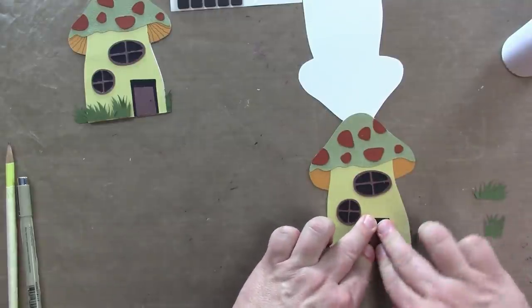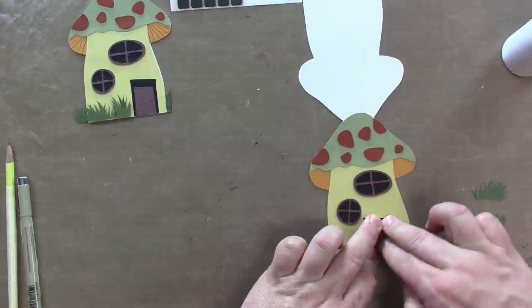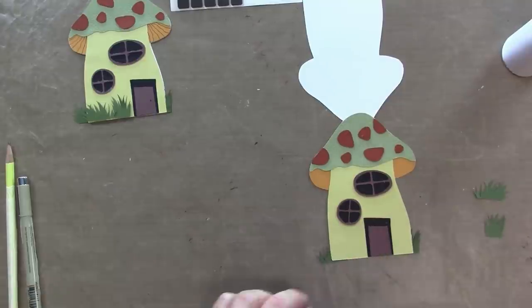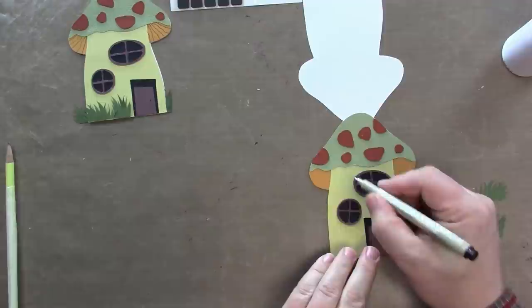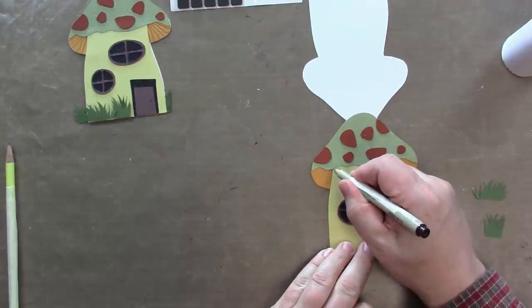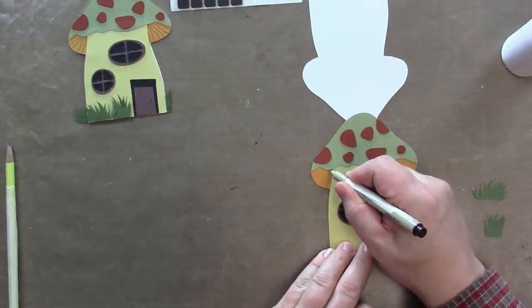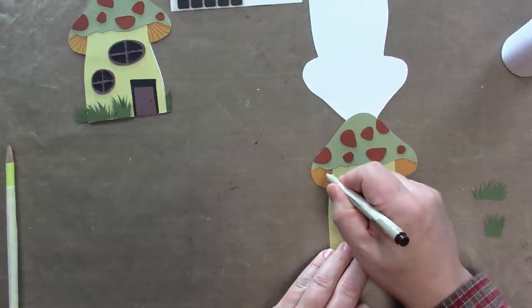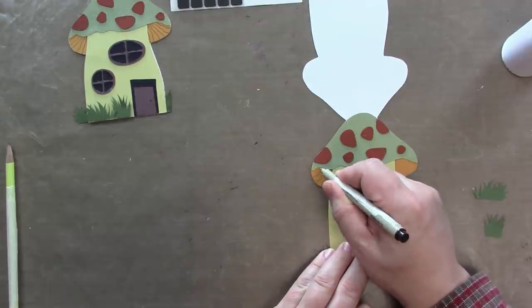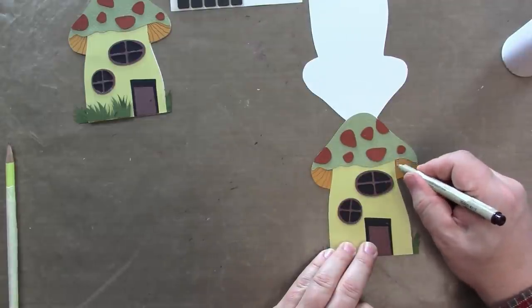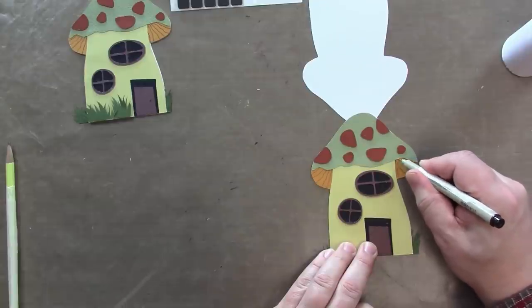Now to add some details to the card, we can draw the gills on the underside of the mushroom. And so I'm using a very fine marker to just draw some of those lines. You know that's the fleshy part underneath a mushroom cap. I think that little bit of detail really adds a lot to the card.